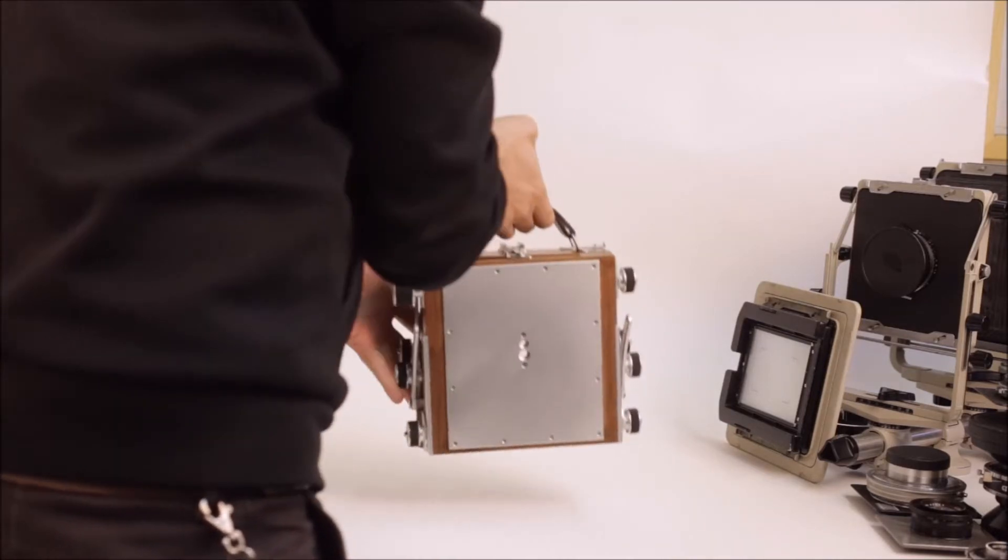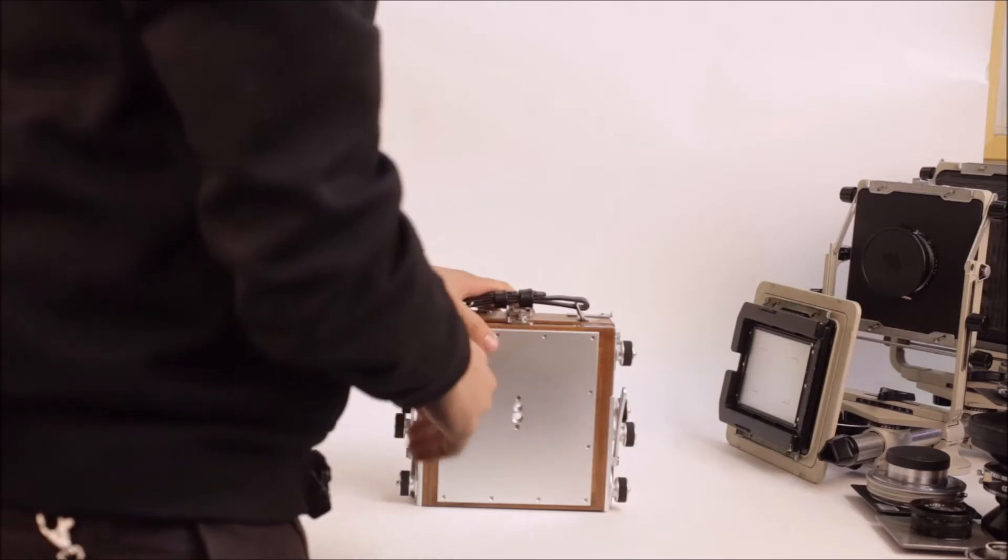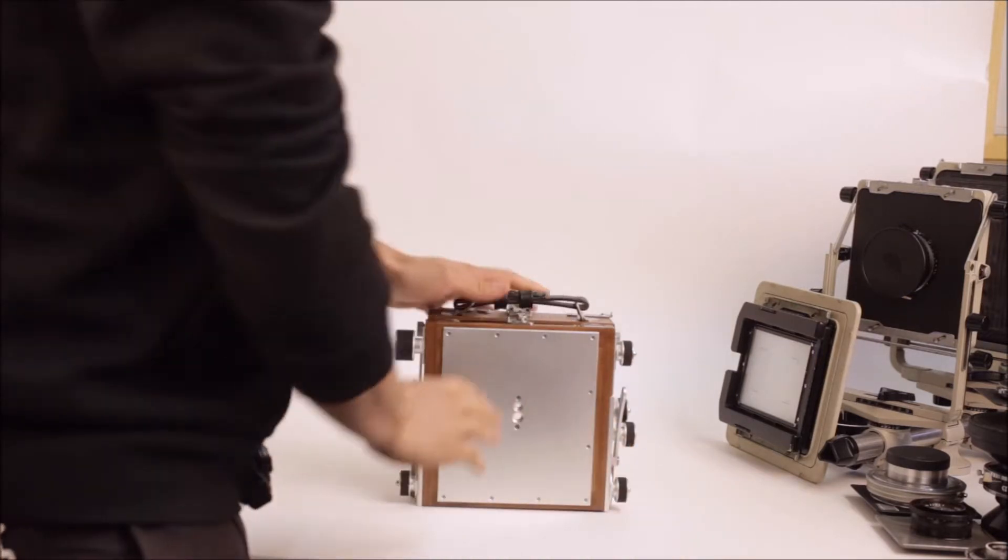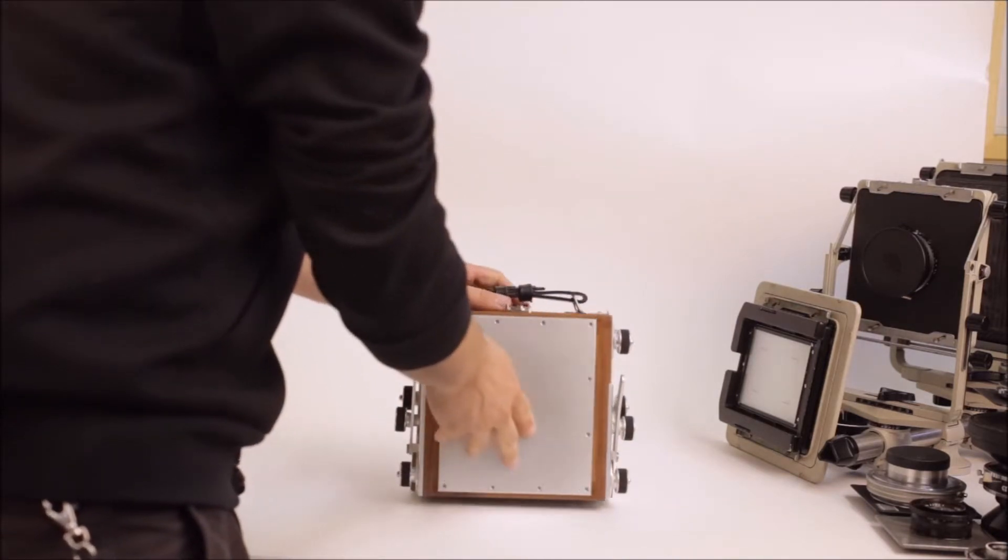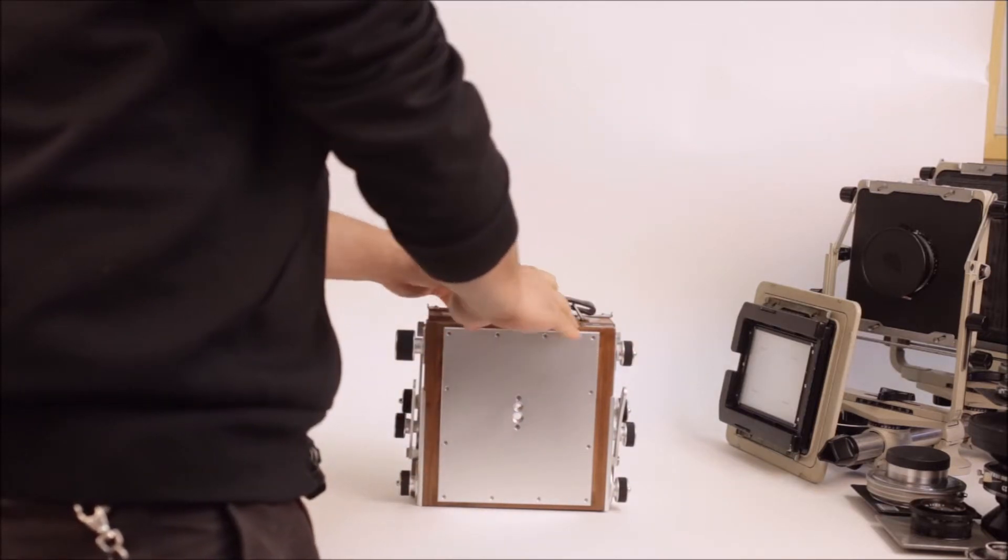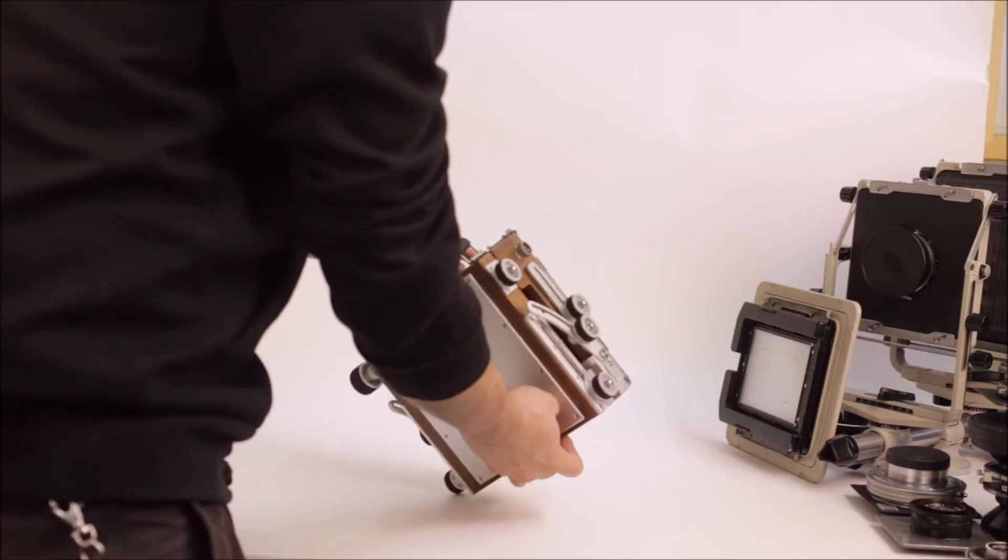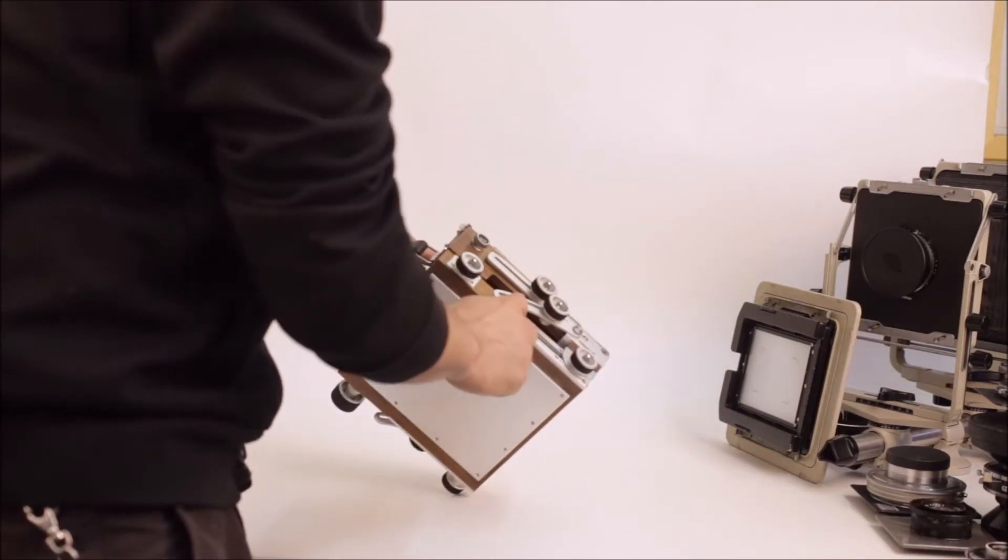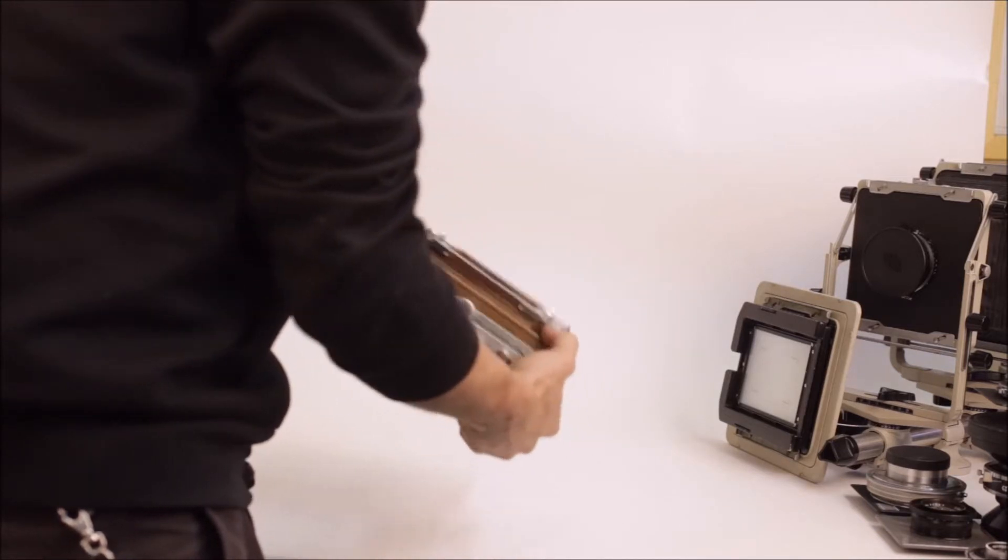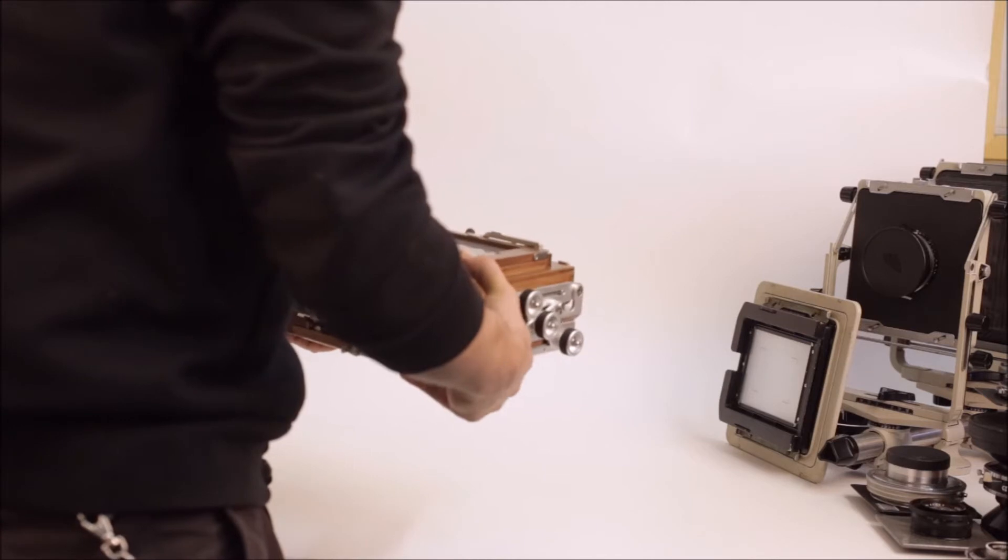Alright. So, the TZ45C has a completely reworked front extension, and the base is also different with the rear being able to track on a different type of track than the B model, certainly different than the C model. Let's open it up and see what we have.